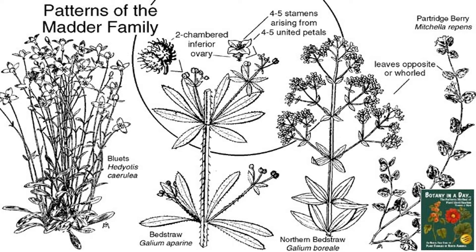Despite their many unique uses and attributes, the many members of this vast and diverse family share some common traits by which they may be identified. These include a pattern of leaves opposite each other with unbroken leaf margins and leaf-like appendages at the base of the leaf stalks, known as stipules. This pattern of leaf arrangement is referred to as whorled.